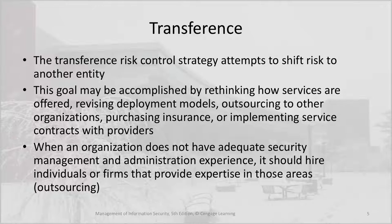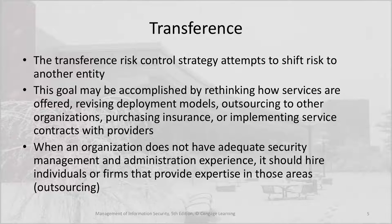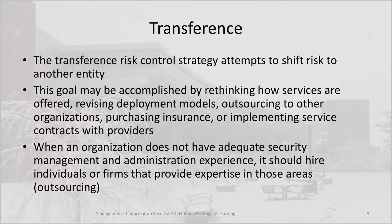The transference risk control strategy attempts to shift risk to another entity. This goal may be accomplished by rethinking how services are offered, revising deployment models, outsourcing to other organizations, purchasing insurance, or implementing service contracts with providers. When an organization does not have adequate security management and administration experience, it should hire individuals or firms that provide expertise in those areas. This is outsourcing.